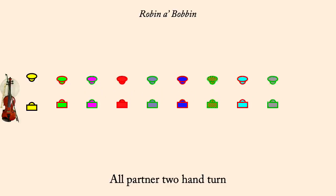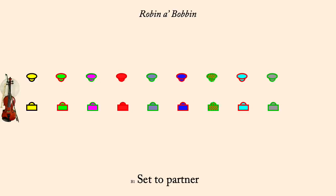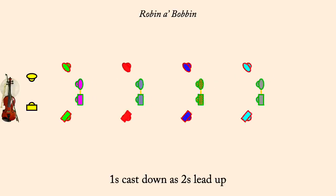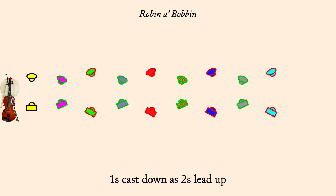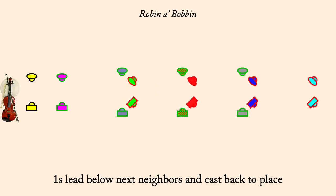Set to partner. Ones cast down as twos lead up. Ones lead below next neighbors and cast back to place.